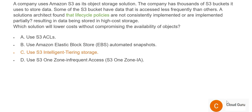Let's look at option D: S3 One Zone Infrequent Access. This is the cheapest option, but it compromises the availability of objects — because data is on a single availability zone, and if that data center goes down, your entire data is lost. The question clearly says you should not compromise the availability of objects, so D is wrong. Also, putting everything in one zone regardless of access pattern is not good practice — some data should go to hot tier, cold tier, archive, or deep archive. So D is wrong, and C is the right answer.